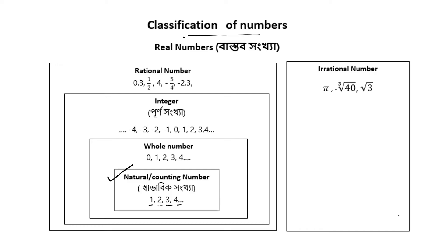This is the natural number. This is the whole number. The whole number is 0, 1, 2, 3, 4. This is the whole number.